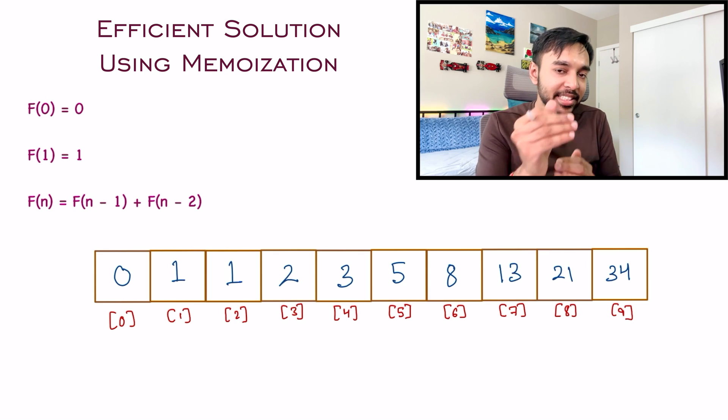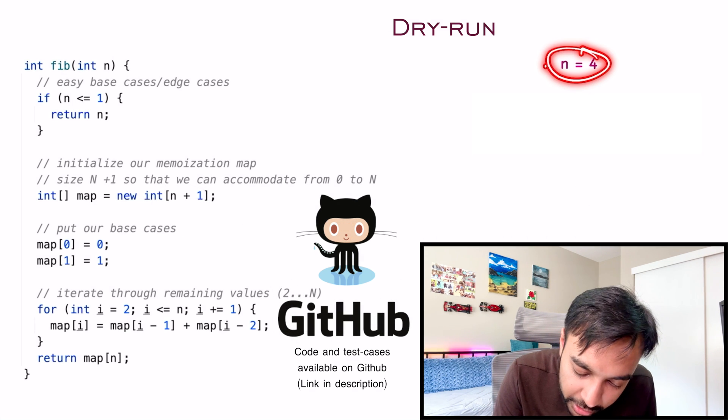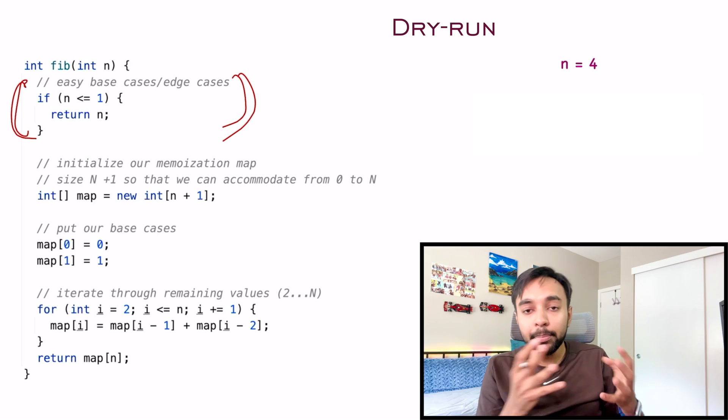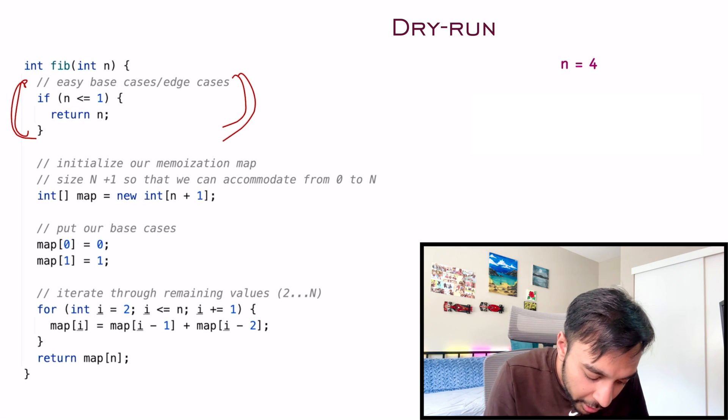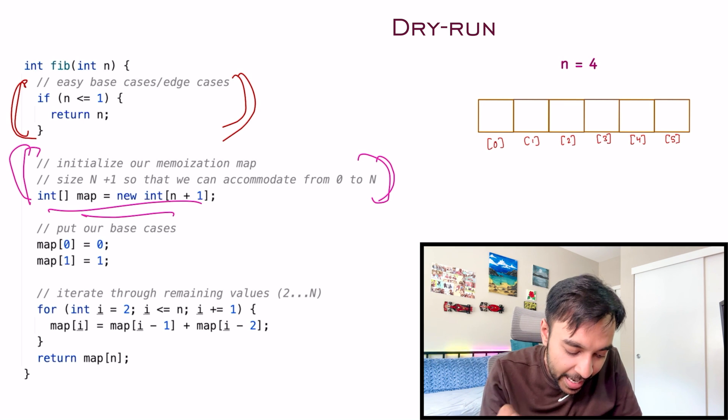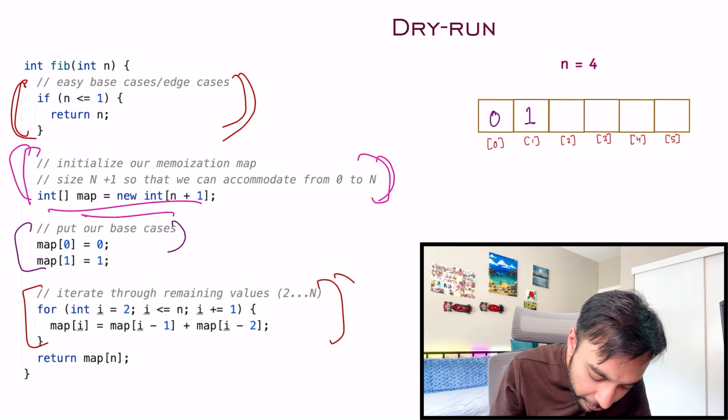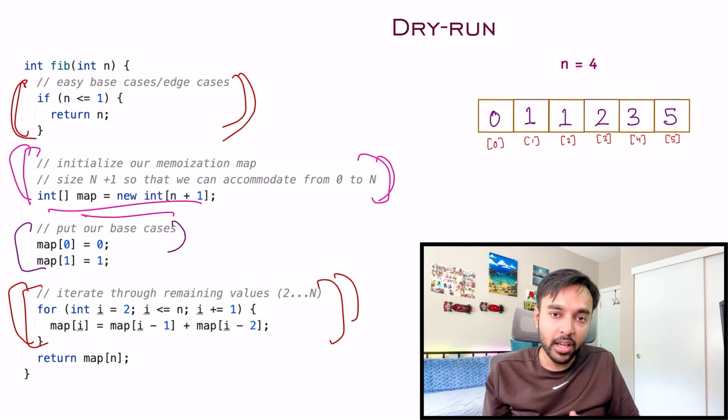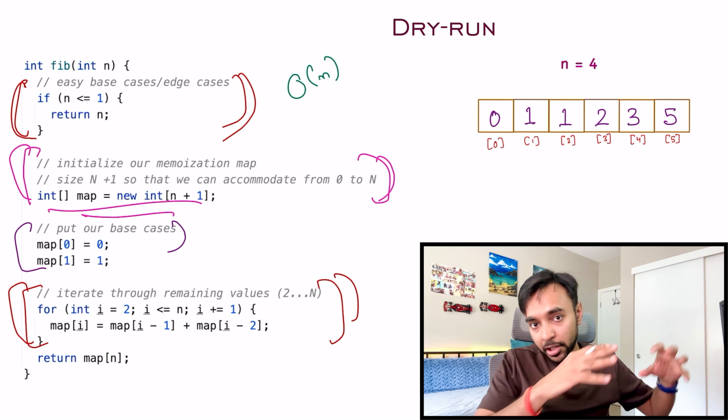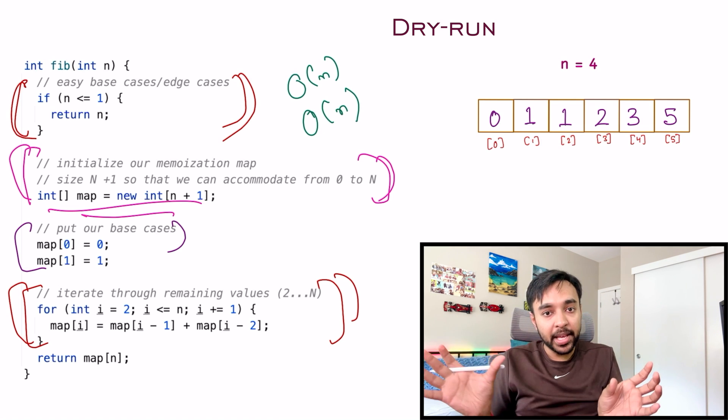Let's quickly do a dry run of this code. On the left, you have the actual code to implement this solution. On the right, I have n equals 4 passed as an input parameter to the function Fib. First, we handle base edge cases - if n is 0 or 1, you simply return it. In the next step, I initialize a memoization map that will store all my memoized values. To start, I put in my base cases: map(0) is 0 and map(1) is 1. I start a for loop where I keep adding previous values to fill up my map.